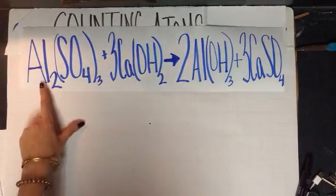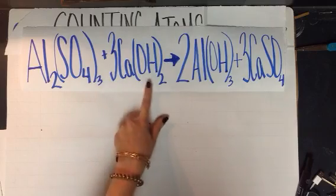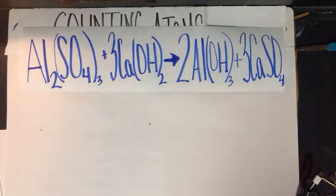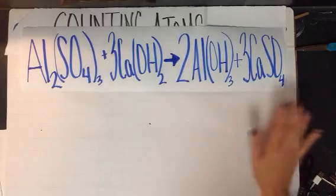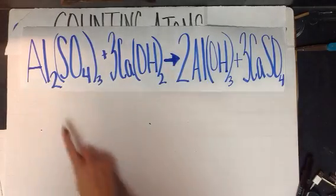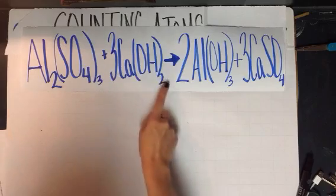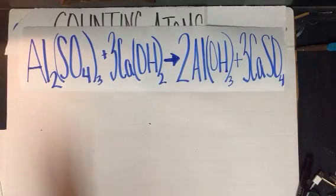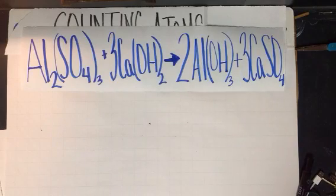Now, I've got aluminum sulfate reacting with calcium hydroxide. And on this side, I have aluminum hydroxide and calcium sulfate. So you don't have to know how to write this, you just have to copy it down in your notes right now. So take a second and copy this down. Make sure you remember all the subscripts and the coefficients, and don't forget where you see parentheses.